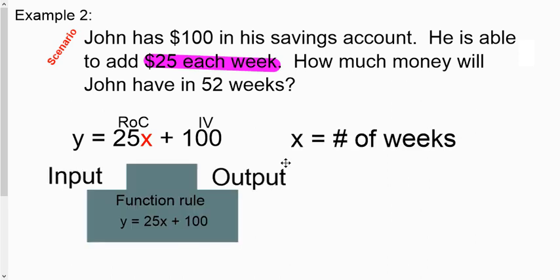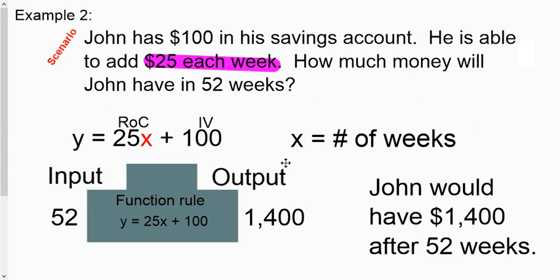So with our input-output machine there, we've got our function rule. We can shove in the number of weeks, X, and get Y, which is just going to be how much money John has in his account. So if we shoved in 52 for 52 weeks, we can literally get $1,400. So that's how this works.